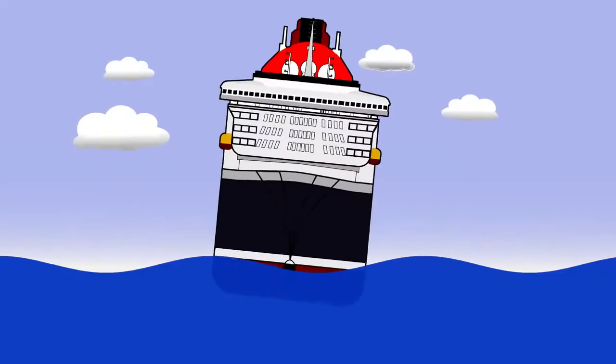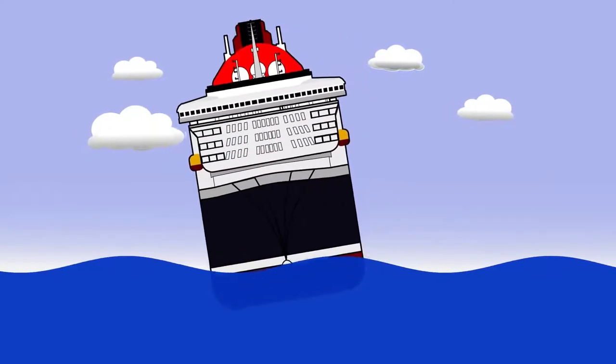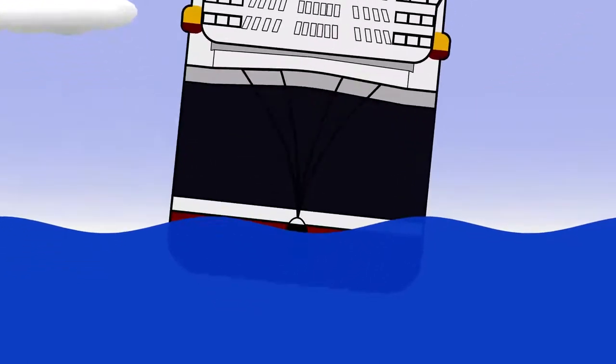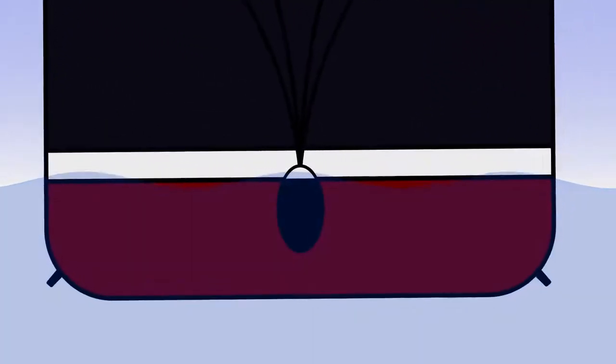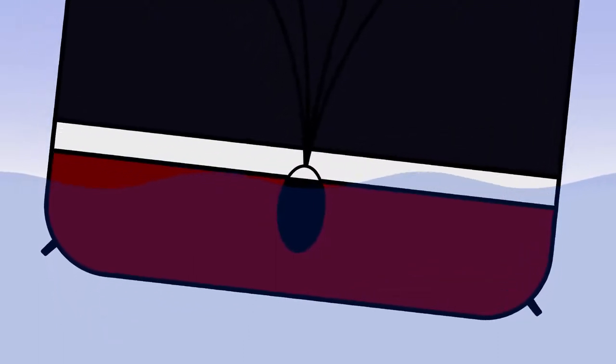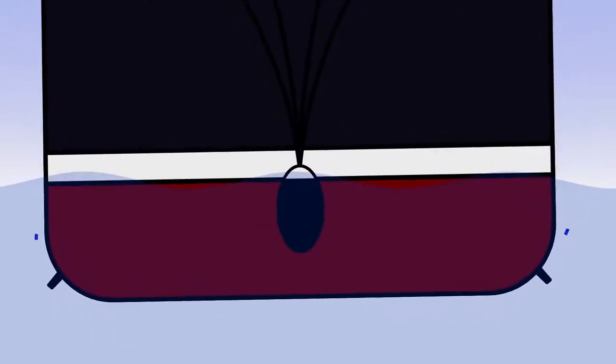A good example of passive stabilizers are bilge keels. These are protrusions on the bilges of a hull, and all they effectively do is dampen any roll. They generate turbulence as they move up and down.